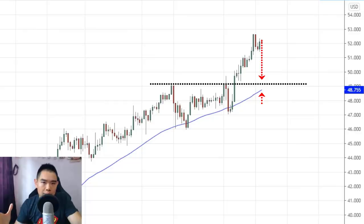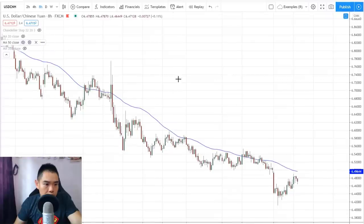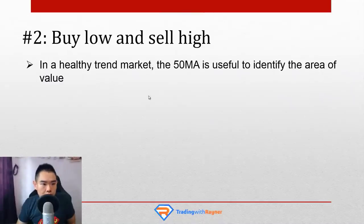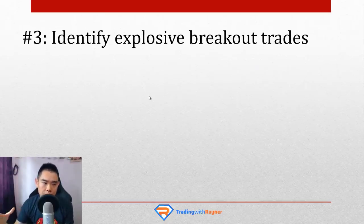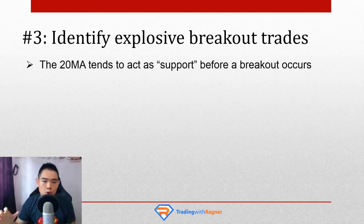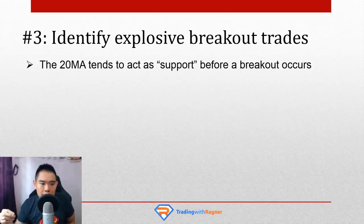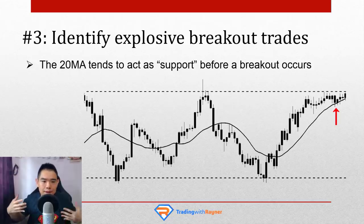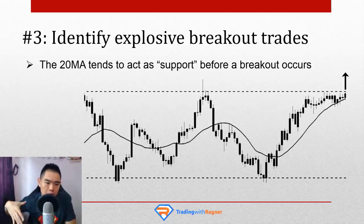Another thing to share is the 20 MA on a daily time frame for identifying explosive breakout trades. Before the market can break out of a range, it has to be stuck within a range. When it's within a range, the key thing to look for is the 20 MA acting as support before a breakout occurs. For example, if the market is in a range and starts to consolidate, you pull out the 20-period moving average and you want to see the pattern where the 20 MA seems to be supporting the price up higher — that's a sign this market is getting ready to break out higher. Vice versa, if the 20 MA is coming down and holding price lower, there's a good chance the market could break down lower.